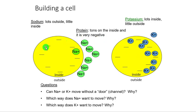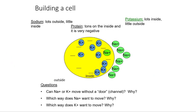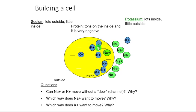If we overlap these two pictures, this is actually what the cell looks like. Where do I see a higher concentration of sodium — inside or outside? The answer is outside. Where do I see a higher concentration of potassium — inside or outside? The answer is on the inside. So the next question is: which way does sodium want to move and why? And then: which way does potassium want to move and why?